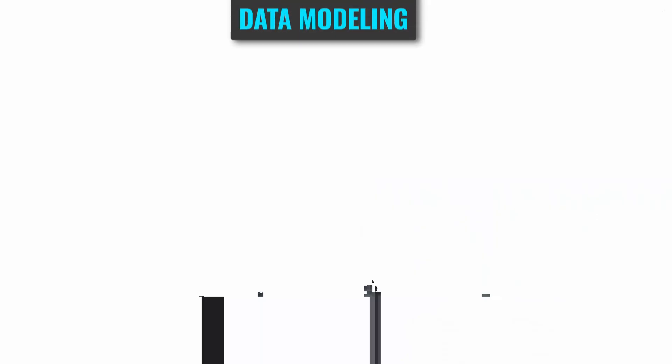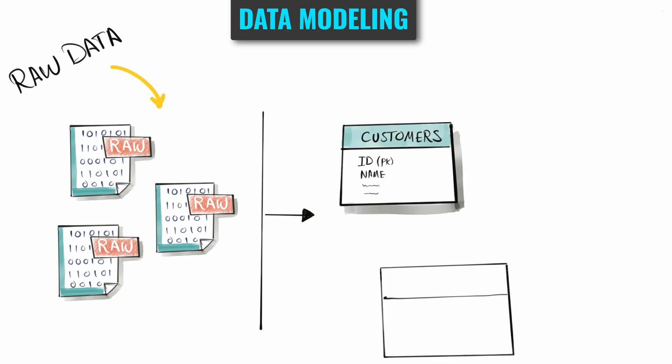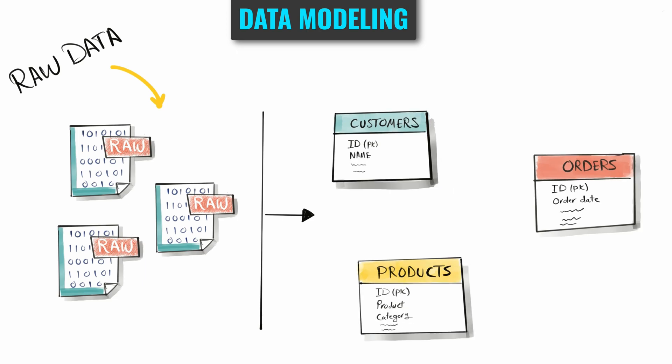So let's start with the question: what is data modeling? Data modeling is the process of organizing and representing data in a clear and understandable way. Each data model has entities - entities could be things like customers and products or events like orders. Inside those entities we have information we call attributes, like the first name and last name inside the entity customers.